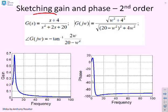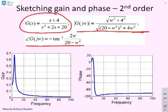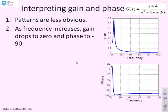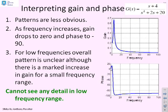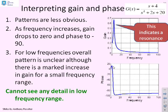Here's a slightly more complex example: G(s) = (s + 4) / (s² + 2s + 20). There's the gain formula and the phase formula. Plugging this into MATLAB, the curves look different from the earlier two. The gain plot starts at 0.2, goes up, then comes down and goes to zero. The phase plot starts at zero, goes up slightly, then drops down rapidly towards minus 90 degrees. Key things to notice: it's difficult to see detail in the low frequency range, the peak is cramped, and this peak in the gain plot indicates a resonance — a topic we'll return to later.